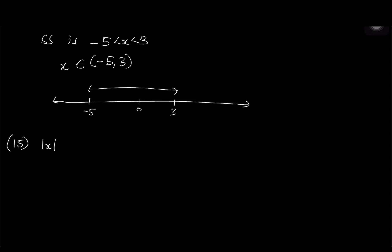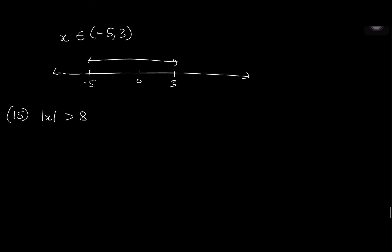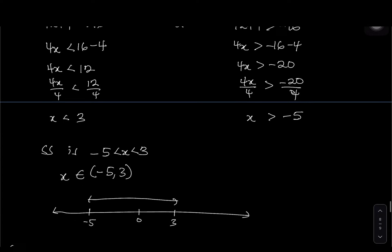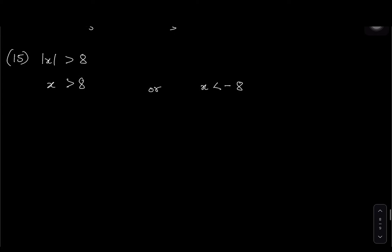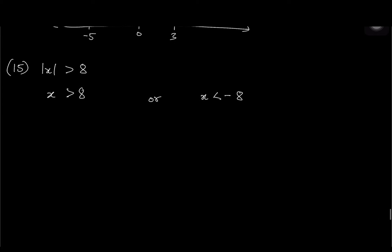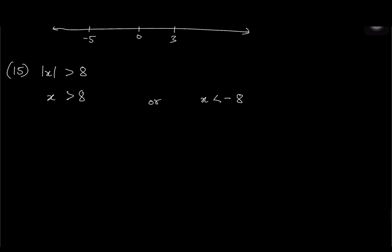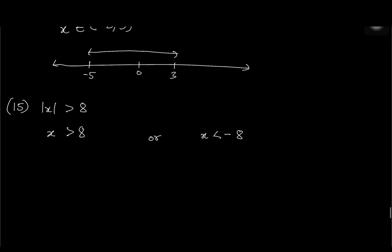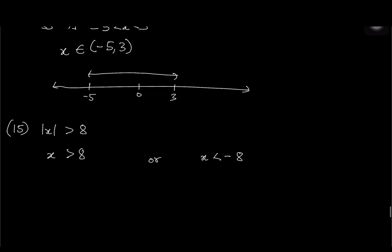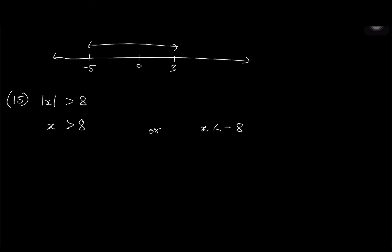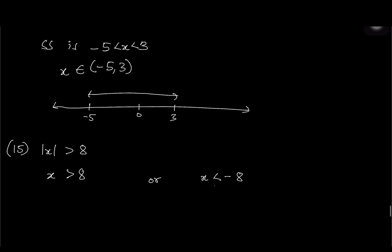Number 15: absolute of x greater than 8. Two statements: x greater than 8 or x less than negative 8. In this situation you cannot merge them into a compound inequality because the directions are incompatible. The solution set is x less than negative 8 or x greater than 8.